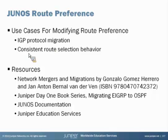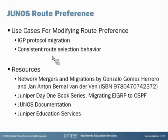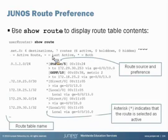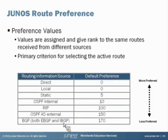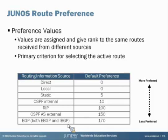You also might want to have consistent behavior with regards to route selection in a multi-vendor environment. Different vendors generally have different values associated with routes, and it affects route selection behavior. For instance, Junos uses a default preference value of 170 for both EBGP and IBGP. If you're concerned about route selection behavior being consistent in a multi-vendor environment, you may want to change these values.